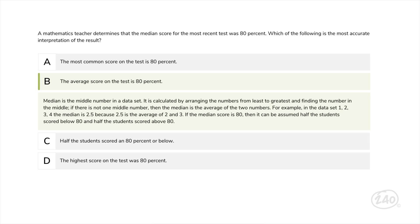Median is the middle number in a data set. If the median score is 80, then it can be assumed half of the students scored below 80 and half of the students scored above 80. Two more left. Don't stop now.